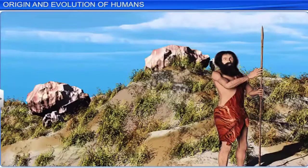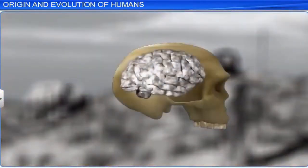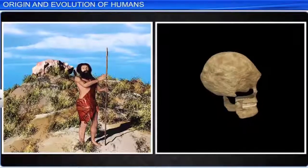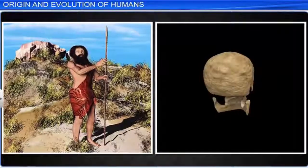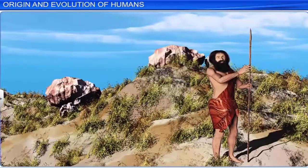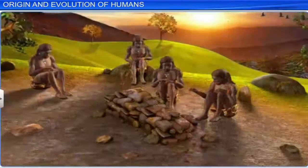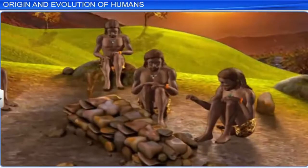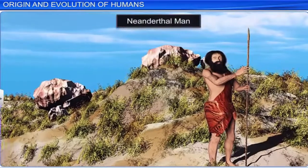Homo sapiens neanderthalensis, or Neanderthal man, with a brain size of 1400 cubic centimeters, lived in Europe, northern Africa, and eastern and central Asia. The word 'Neanderthal' is derived from the Neanderthal valley in east Germany, where a Homo fossil was found in 1856. The Neanderthal man is supposed to be the primitive ancestor of the modern man. Members of the Neanderthal species used hides to cover their bodies and buried their dead. They were cave dwellers and good hunters, and could use many tools. Neanderthal man was considered to be in direct line of ancestry of modern man.